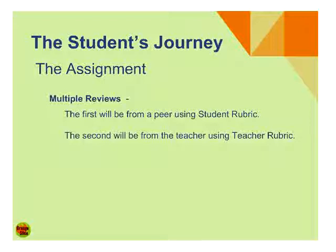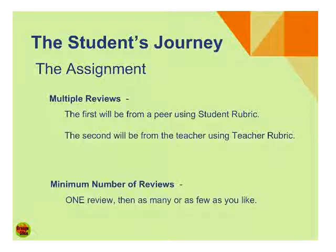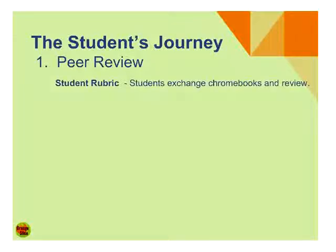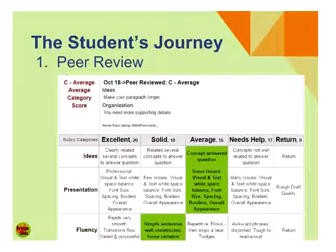The student's journey: we need multiple reviews because if we're showing student growth, we need to quantify initial and final — or initial and some spots in between and final. We need that assignment looked at at least twice in order to show growth. So we're going to use teacher rubric and student rubric. You only need one review before you do the final grade — that's the important part to remember. We're going to start off with the peer review: students finish their work, reach a milestone, exchange their Chromebooks, open up student rubric, and perform the student rubric analysis.